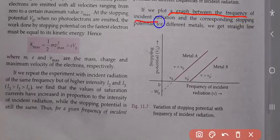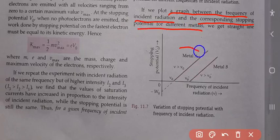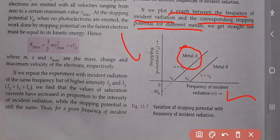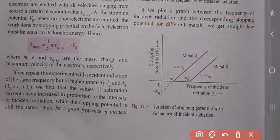If we plot a graph between the frequency of incident radiation and corresponding stopping potential for different metals, we get a straight line. Metal A और Metal B दोनों के लिए frequency बढ़ने पर stopping potential linearly बढ़ता है। ν > ν₀ condition होनी चाहिए — ν₀ threshold frequency है। इससे कम frequency पर photoelectric effect नहीं होगा।